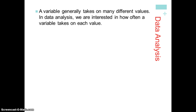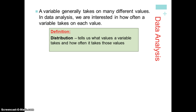A variable can take on many different values. In that example about students' favorite color, the variable is favorite color and the values it could take on might be red, turquoise, orange, or purple. In data analysis, sometimes we want to know what the values are, and sometimes we're interested in how frequently a variable takes on a specific value. A distribution is when we take a look at the frequency of each of the different values — like counting how many letters are in each student's first name.